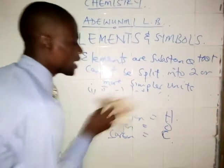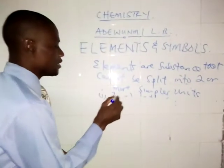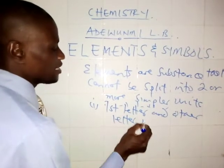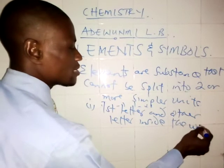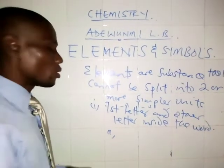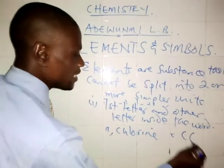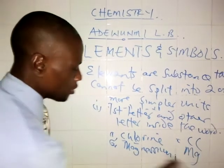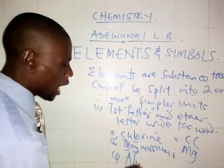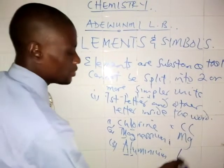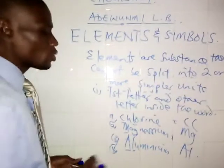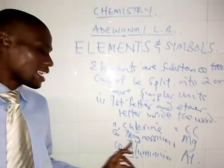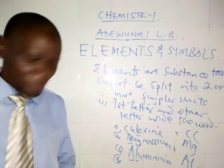The second category: we can derive the symbol from the first letter and another letter inside the word. For example, chlorine — symbol is CL (C and L). Magnesium — symbol is MG (M and G). Aluminium — symbol is AL (A and L). Those are examples of the second category.